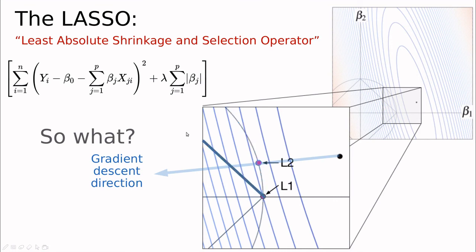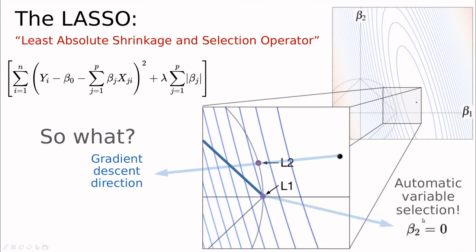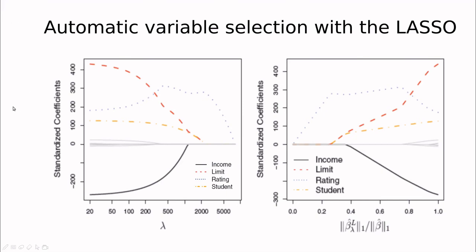The key difference from Ridge is that with the Lasso's square constraint, the closest point to the error function often lands exactly on an axis — meaning beta2 equals zero. This is automatic variable selection: we set a coefficient to zero without doing anything explicitly. In a high-dimensional example, increasing lambda causes some parameters to drop to zero one by one — first one line drops, then others — automatically selecting among all inputs without any correlation analysis or iterative process. That's why the Lasso is so popular.